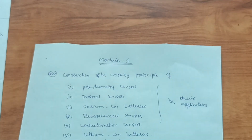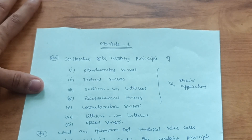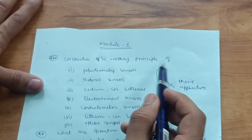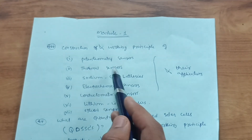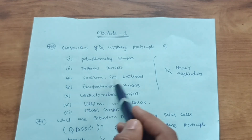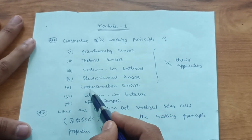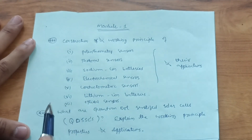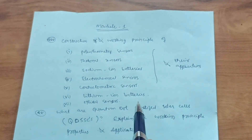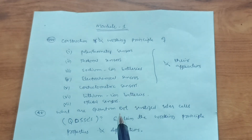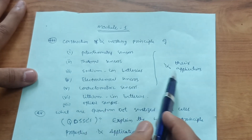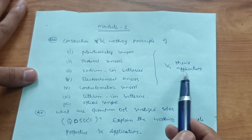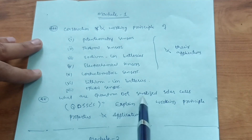Module 1 has some construction and working principle questions. The question format will be: write down the construction and working principle of thermal sensors, potentiometry sensors, sodium ion batteries, electrochemical sensors, conductometric sensors, lithium ion batteries, and optical sensors. These seven types require you to practice the diagrams and then write the working principle. If you understand the construction and working parts, they are easy to memorize. Questions will also ask for their applications — typically four or five applications.